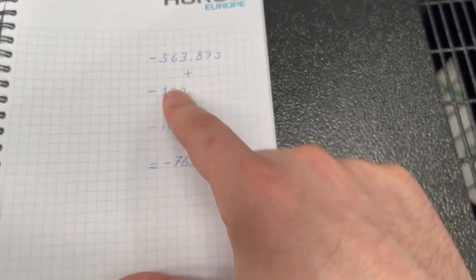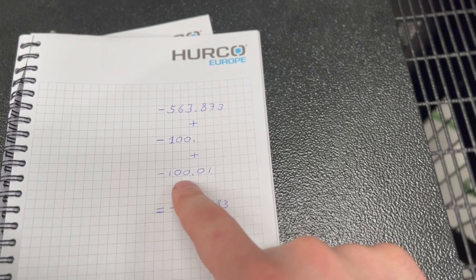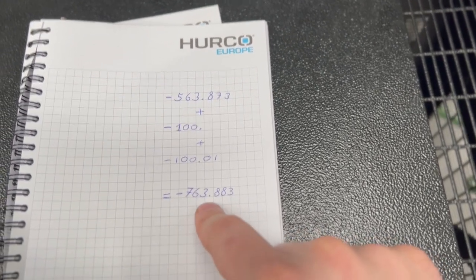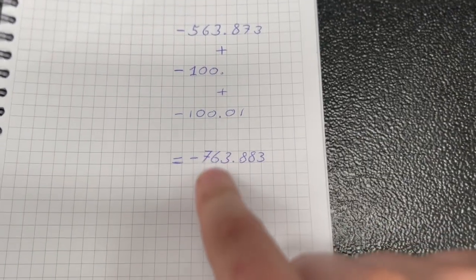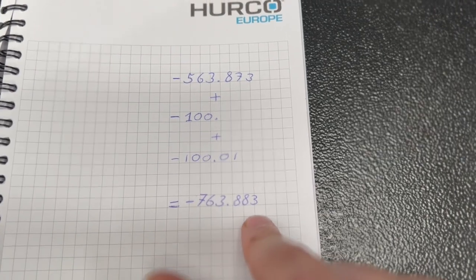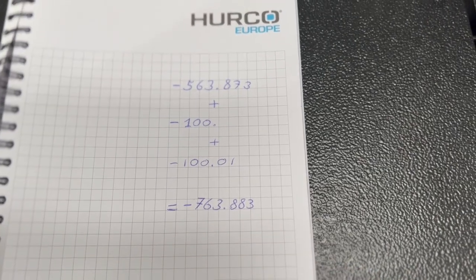So we add on our slip figure and then we add on our mandrel figure or tool of a known length which is 100.01 and that gets us to this final figure here. So you could just do this in a calculator, add this up and then type this minus figure into the Z reference as well if you wanted to.